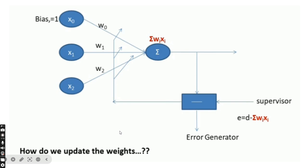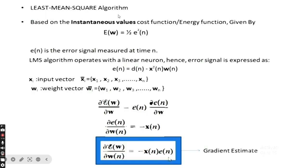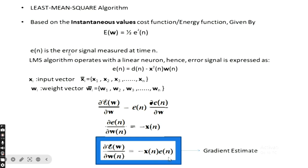Now we see how to update the weights. Based on the instantaneous value, the energy function is given by E(W) = ½·e²(n). The LMS algorithm operates with a linear neuron.